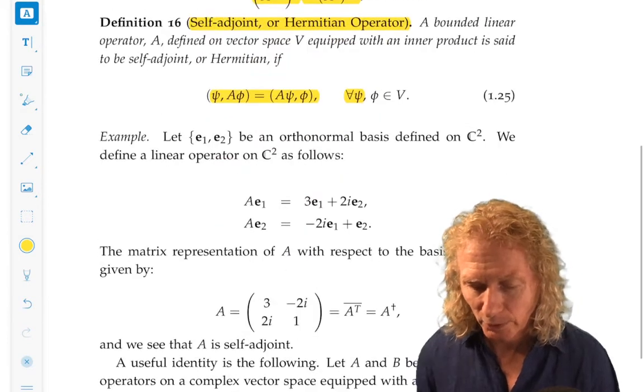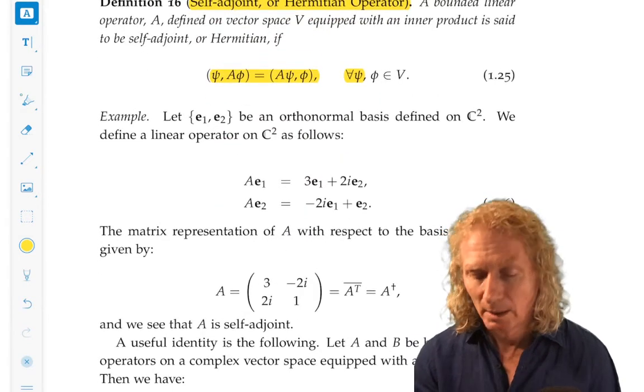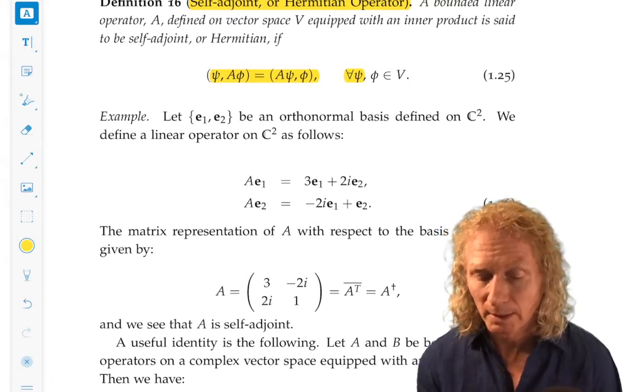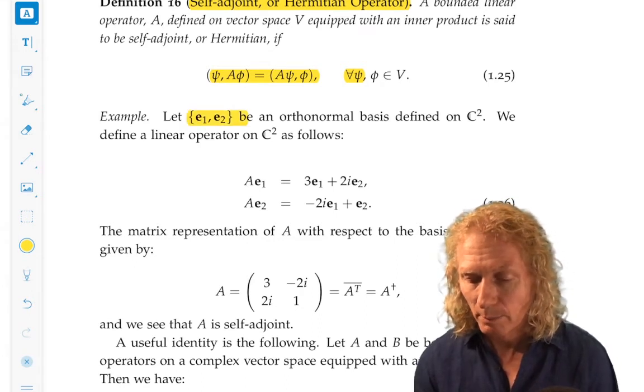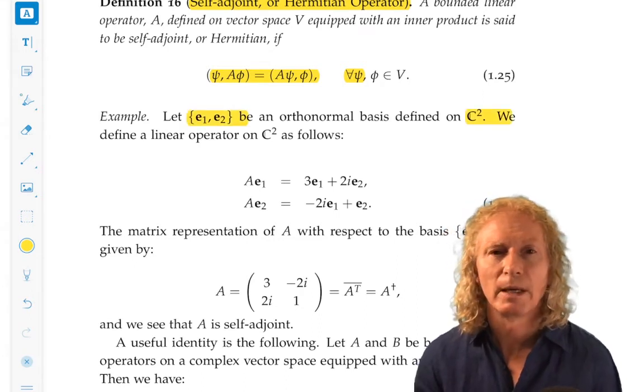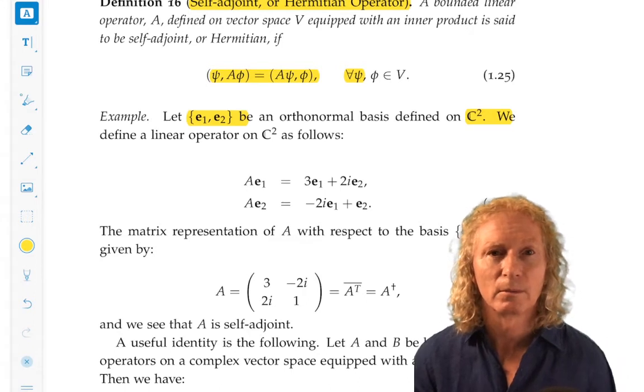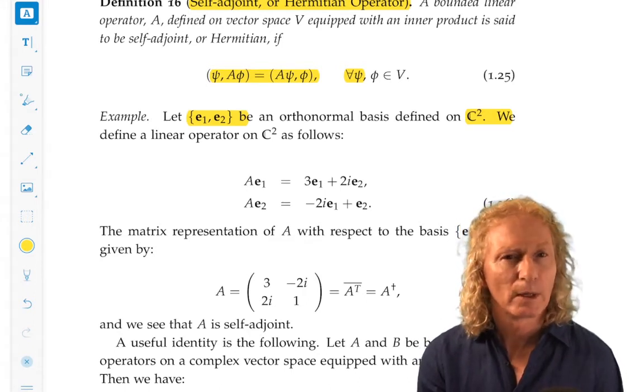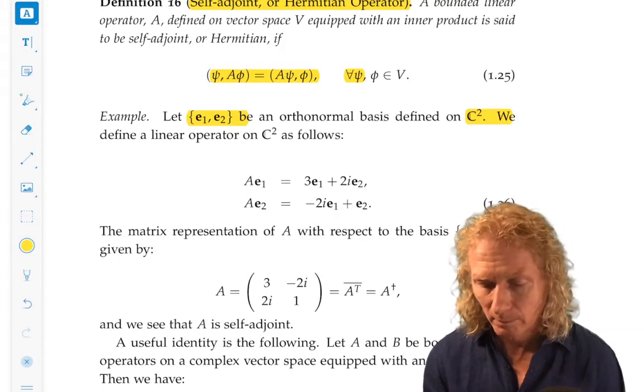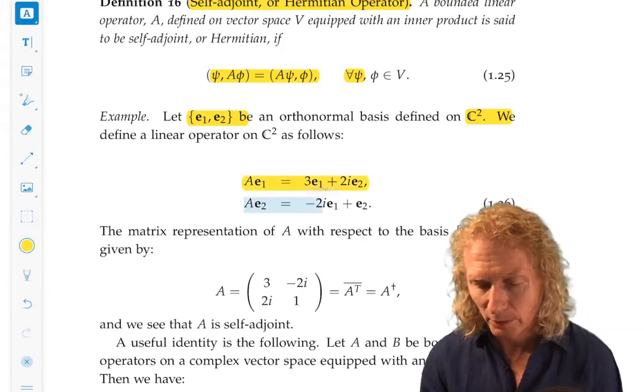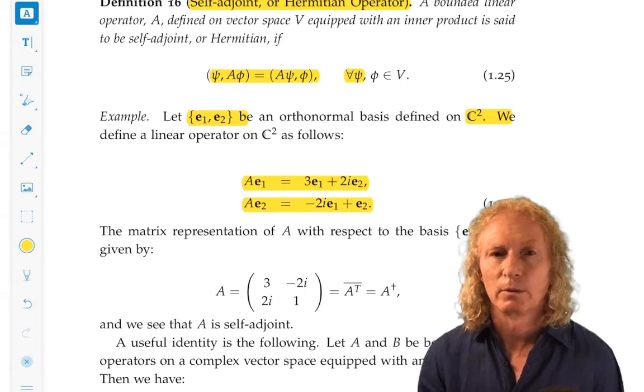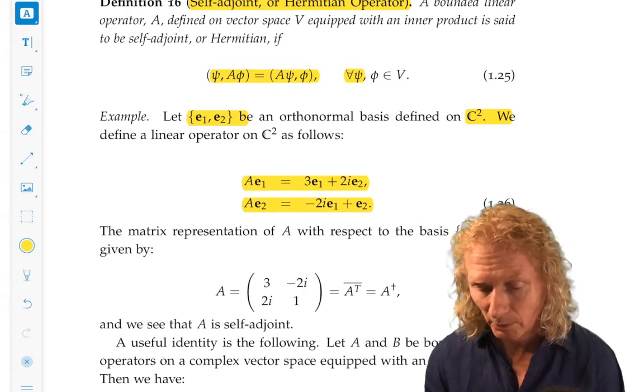Now, let's look at a simple example. So, we consider C2 and let E1, E2 be a basis, orthonormal basis on C2. So, an operator is defined by how it acts on basis. And I give it this definition here. Now, we can write down the matrix representation for this operator in this basis. And it's given by this matrix.